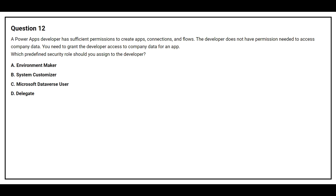Question 12: A Power Apps developer has sufficient permission to create apps, connections, and flows, but does not have permission to access company data. You need to grant the developer access to company data for an app. Which predefined security role should you assign? Options: A) Environment Maker, B) System Customizer, C) Microsoft Dataverse User, D) Delegate. The correct answer is option D: Delegate.